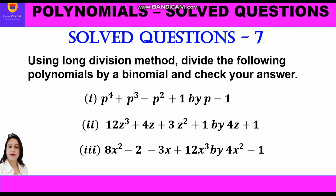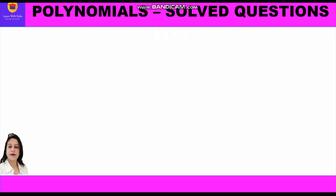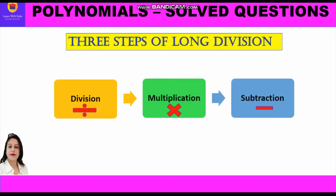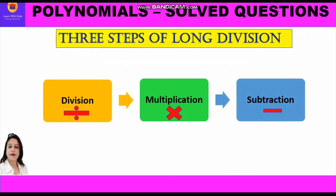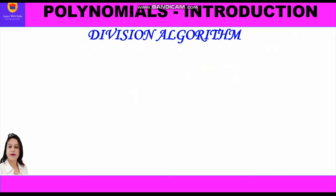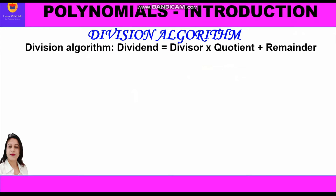We have to use long division to divide these polynomials by a binomial and check our answer. There are three steps involved in long division: the first is division, the second is multiplication, and the third is subtraction. We shall further use the division algorithm to check our answer after we get the quotient and remainder upon dividing the dividend by the divisor.